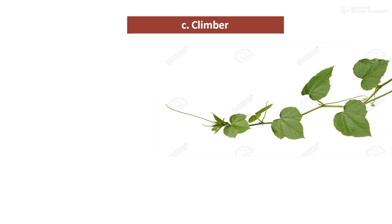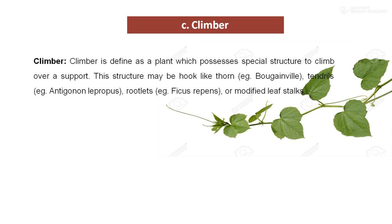Next is the clamber. A clamber is a plant which possesses a special structure to climb over a support. This structure with which it can climb may be a hook like a thorn, it may be a tendril, it may be rootlets, or it may be a modified type of leaf stalk. With the help of such structures, they can easily climb over the support and grow vertically.